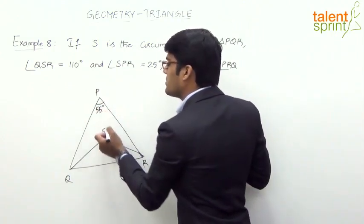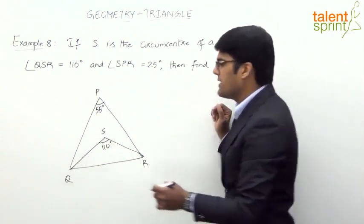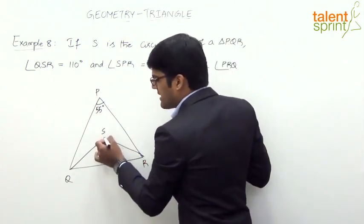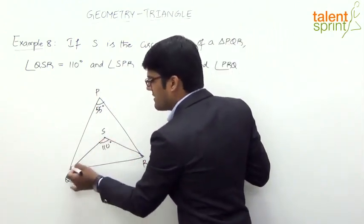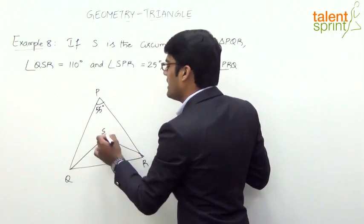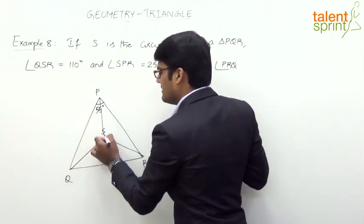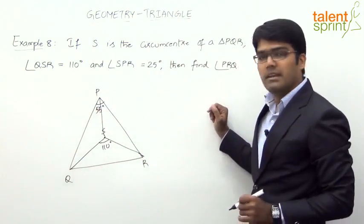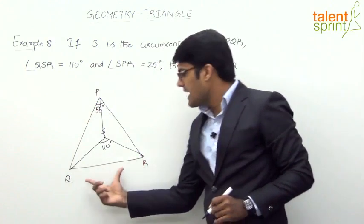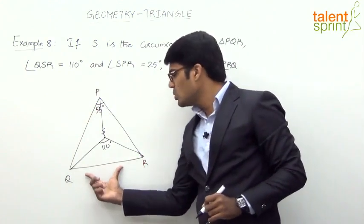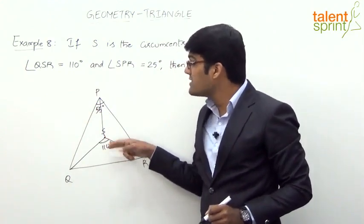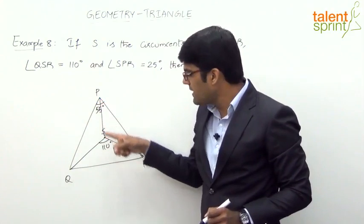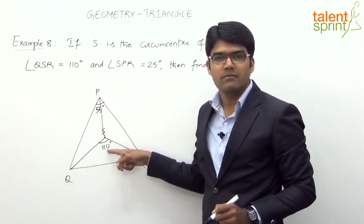We are just marking all the points here. We know that the circumcenter S is equidistant from Q, R, and P. The angle made by side QR with the circumcenter should be twice the vertical angle — so if angle P is 55, only then this angle at the center can become 110.